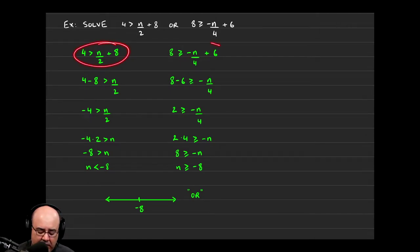we solved the first inequality and we solved the second one. So for the first one, I subtracted the 8 to the left-hand side so I can get the n over 2 by itself. 4 minus 8 is negative 4. So I rewrite what I have left. Negative 4 is greater than n over 2.